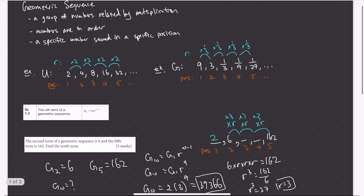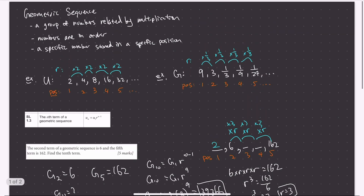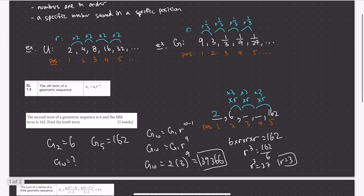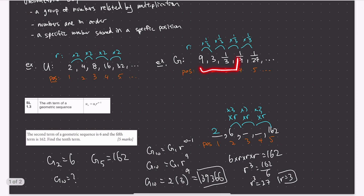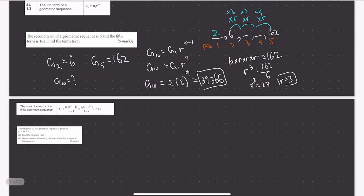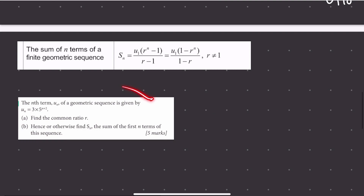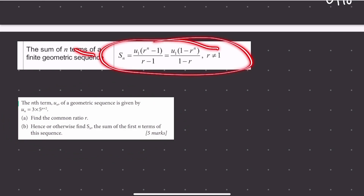Moving on from geometric sequences, we're going to cover geometric series. Geometric series is exactly the same as geometric sequence; however, we're just adding up a certain number of terms — just like arithmetic series adds up terms from an arithmetic sequence.